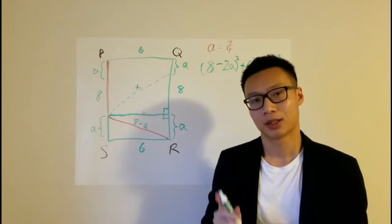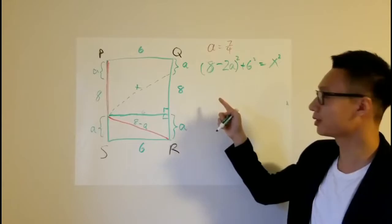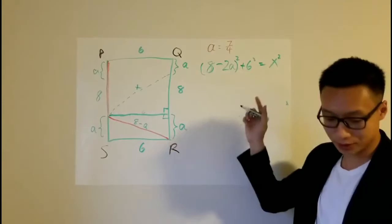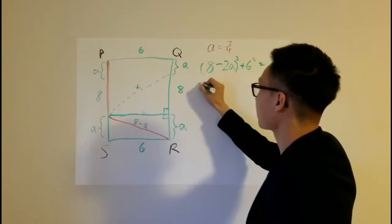Finding a means that we have completed 95% of the work. Because the next step is simply to plug in a, plug a into this expression, and you will get the answer of x squared.